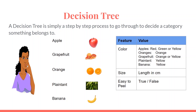The features we use include color — apples are red, green, or yellow; oranges are orange; grapefruits can be orange or yellow; plantains and bananas are yellow. We also use the size of the fruit, measured as length in centimeters, and whether it is easy to peel. The decision tree uses these features to help classify the fruits into different categories.